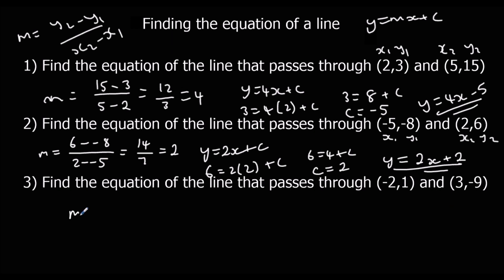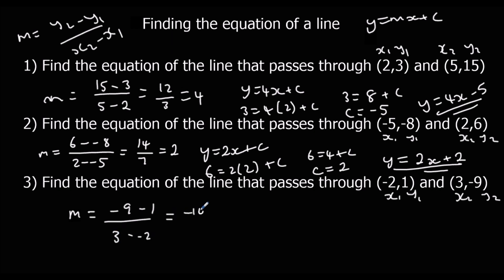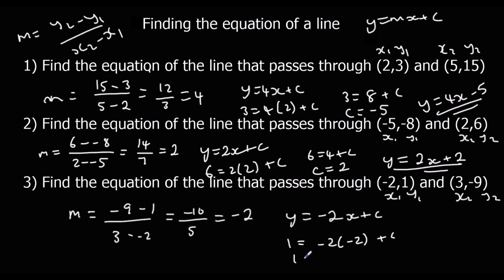And finally, labelling x1, y1, x2, y2 and substituting into the formula: minus 9 minus 1 over 3 minus minus 2 gives minus 10 over 5, so m is minus 2. Therefore y equals minus 2x plus c. Substituting in x equals minus 2 and y equals 1: minus 2 times minus 2 is positive 4, so 1 equals 4 plus c, meaning c must be minus 3. The equation is y equals minus 2x minus 3.